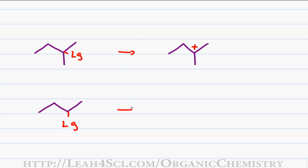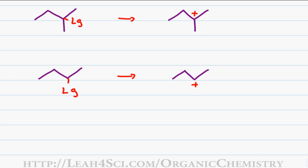When you have a leaving group on a secondary carbon, you will form a secondary carbocation which is stable but not as stable. And finally, when you have a leaving group on a primary carbon, the carbocation that would form is so unstable that this actually will not be seen in reactions.